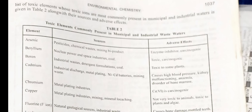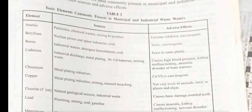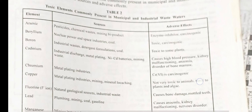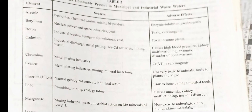The table lists: Arsenic — sources: pesticides, chemical waste, mining byproducts; adverse effect: enzyme inhibitor. Beryllium — sources: nuclear power, space industries, coal; adverse effect: toxic, carcinogenic. Boron — sources: industrial waste, detergent formulation, coal; adverse effect: toxic to some plants. Cadmium — sources: industrial discharge, metal plating, nickel-cadmium batteries, mining waste; adverse effect: causes high blood pressure and related disorders.